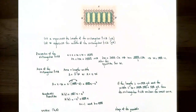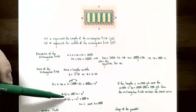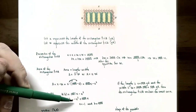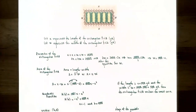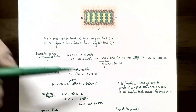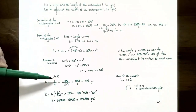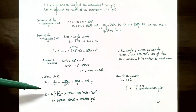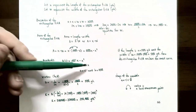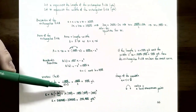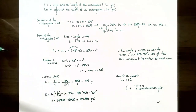Rewriting with the highest power first: A(x) = -x² + 1000x. Here a = -1 (the coefficient of x²) and b = 1000 (the coefficient of x). Using the vertex formula, the x-coordinate of the vertex is h = -b over 2a = -1000 over 2(-1) = -1000 over -2 = 500. So the length that gives maximum area is 500 yards.